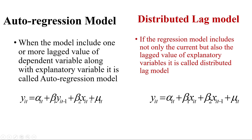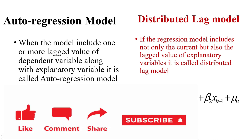But in the autoregression model, we basically include not the lag value of the independent variable; rather we use the lag value of the dependent variable as another independent variable. So these are the basic differences between autoregression model and distributed lag model. I hope you liked this video — if you did, please subscribe to my channel.